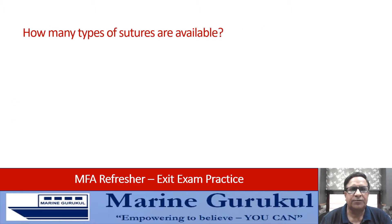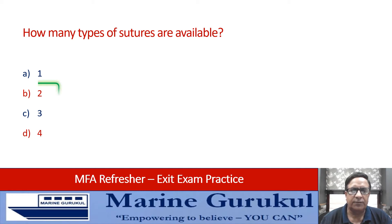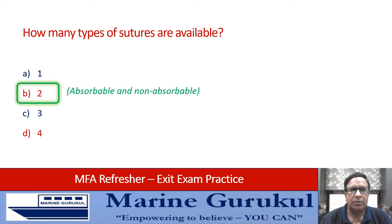How many types of sutures are available — one, two, three, or four? There are two types of sutures available: dissolvable and non-dissolvable, also called absorbable and non-absorbable.